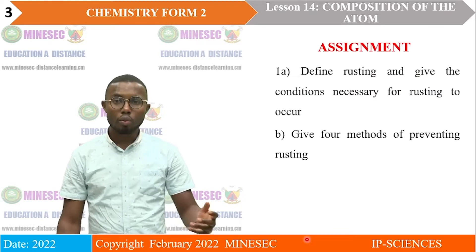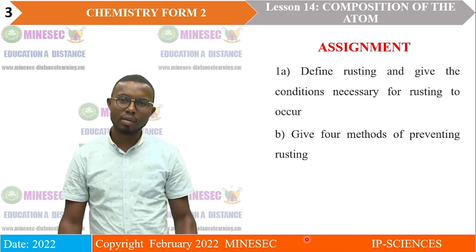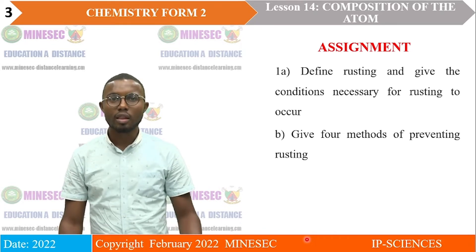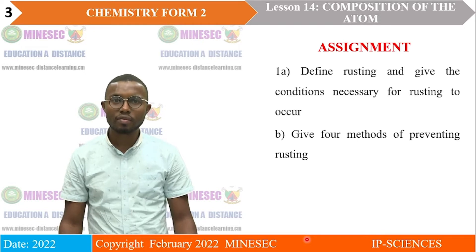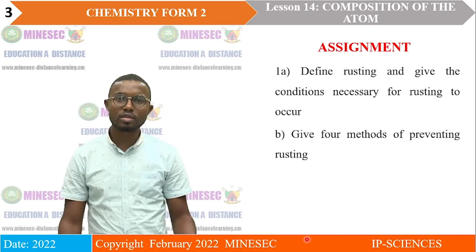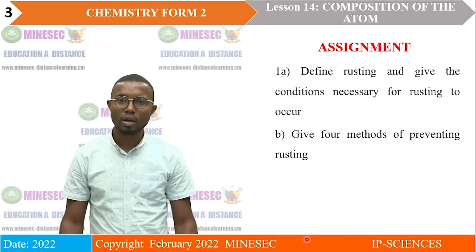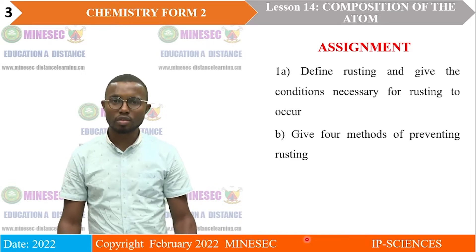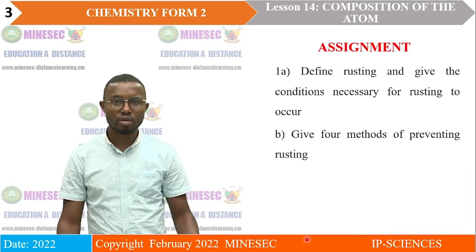We begin with the correction of the assignment from the previous lesson. The assignment was: one, define rusting and give the conditions necessary for rusting to occur; and B, give four methods of preventing rusting.